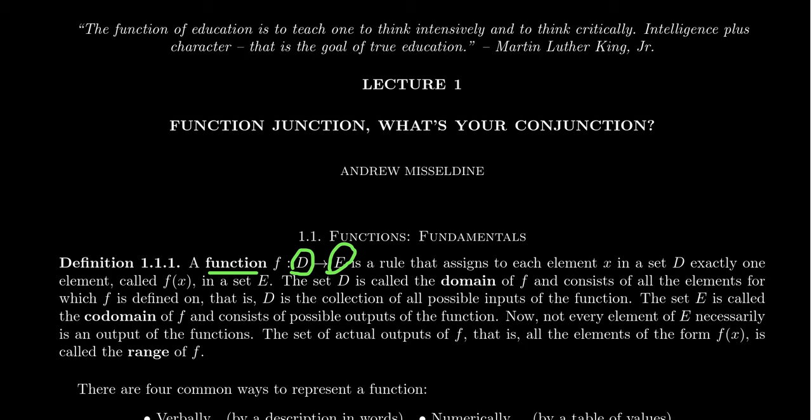D could be the people who are inside this class, the set of all people watching this video. And E could be the set of colors. And our function could then be the rule that assigns to everyone their favorite color. My favorite color would be green. Your favorite color might be aqua, maroon. We could have a function that connects people to colors. This is a mathematics class, so our functions, for the most part, will be sets of real numbers or subsets of real numbers.